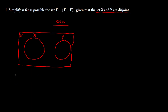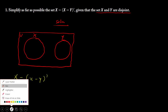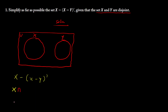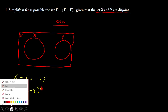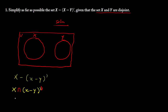After understanding that, I'll work on simplifying X minus (X minus Y)'. Remember, the minus can be changed to intersection, so we have X intersection (X minus Y)'. Now because we have an intersection there, this expression acquires another complement — and you know that a complement of a complement gives you back the original, so we have X intersection (X minus Y).